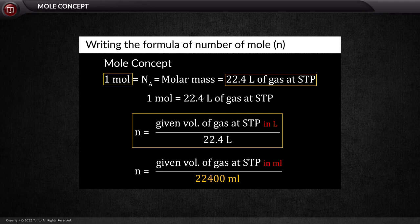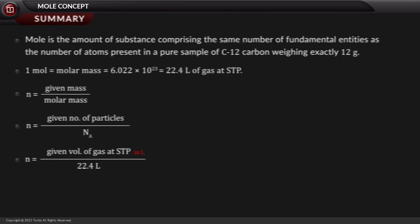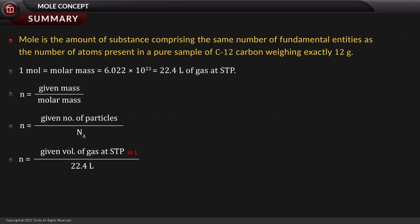To summarize: a mole is the amount of substance comprising the same number of fundamental entities as the number of atoms in a pure sample of C-12 carbon weighing exactly 12 grams. One mole equals molar mass, equated with Avogadro's number 6.022 × 10²³, which corresponds to 22.4 liters of gas at STP. The three key formulas are: n = mass / molar mass; n = number of particles / Avogadro's number; and n = volume of gaseous sample at STP in liters / 22.4 liters.